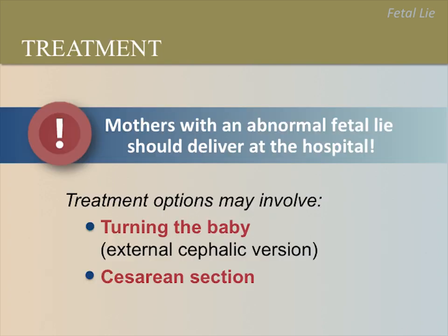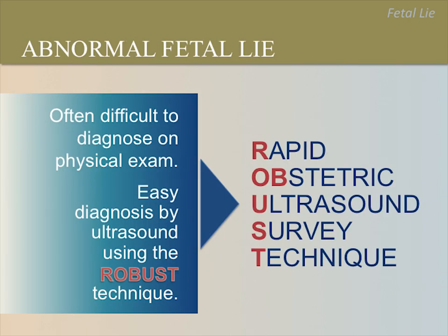Always refer mothers with an abnormal fetal lie or presentation at 36 weeks or later to deliver at a hospital. Mothers need to be at a facility that can safely attempt to turn the baby, called aversion, or perform a cesarean section in case of obstructed labor. Many cases of an abnormal fetal lie or presentation are not found before delivery because it can be difficult to diagnose during a regular clinical exam, and many mothers deliver at a facility that cannot perform a cesarean section if needed.